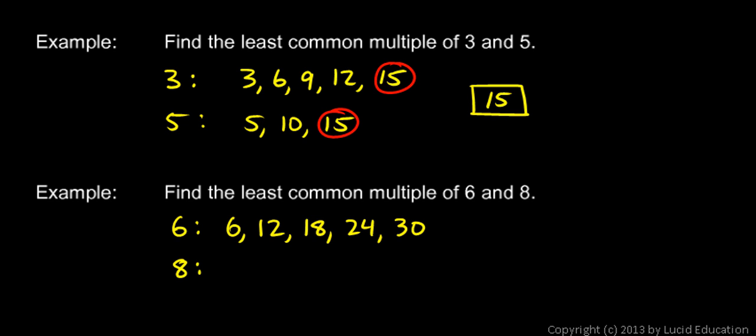Okay, let's list some multiples of 8. Well, there's 8, 16, and 24. And I can stop, because I've now found one that shows up in both lists. 24 is a common multiple of 6 and 8. And you can see there are no numbers in the list that are less than 24 that also show up in both lists. 24 is the least common multiple of 6 and 8.